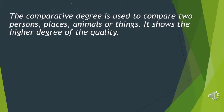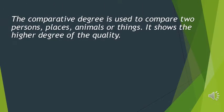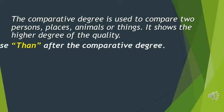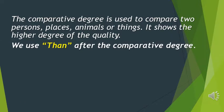Next is the comparative degree. Comparative means comparison with others. The comparative degree is used to compare two persons, places, animals, or things. It shows the higher degree of the quality. We use 'than' after the comparative degree.